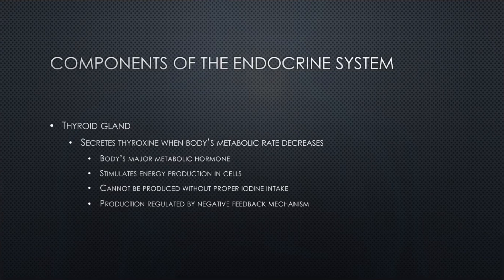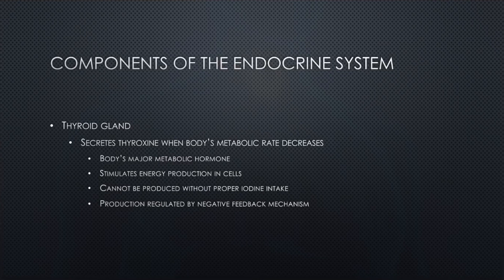Super important when talking about the endocrine system is an understanding of the thyroid gland. Thyroid hormones affect metabolism, and they're secreted in response to stimulation of the thyroid gland by the anterior pituitary gland — that's our connection to the brain. The thyroid gland secretes thyroxin when the body's metabolic rate decreases, and it's known as the body's major metabolic hormone. It stimulates energy production in cells and cannot be produced without the proper level of iodine intake.